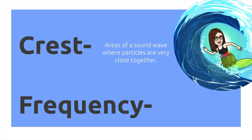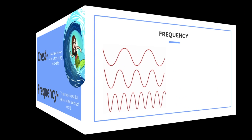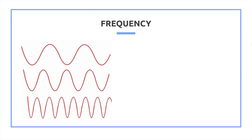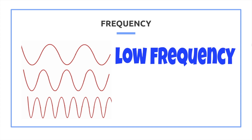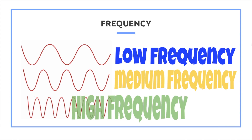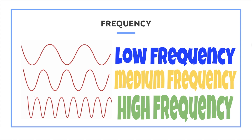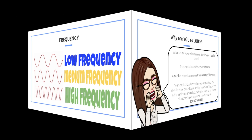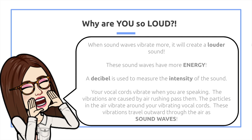Let's look at sound waves. The crests are areas of a sound wave where particles are very close together. The frequency is the number of crests that pass by a certain point each second. Sound waves look like this — the top one is a low frequency, the middle one is a medium frequency, and the bottom one is a high frequency. Can you tell the difference?